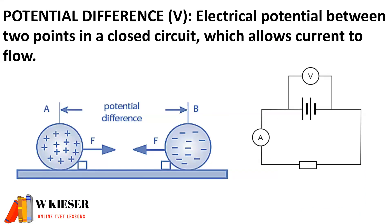Potential difference is the electrical potential between two points in a closed circuit, which allows current to flow, and potential difference is measured across the battery in a closed circuit.